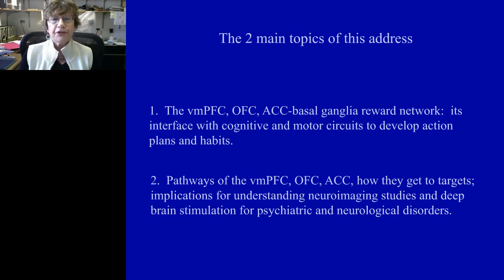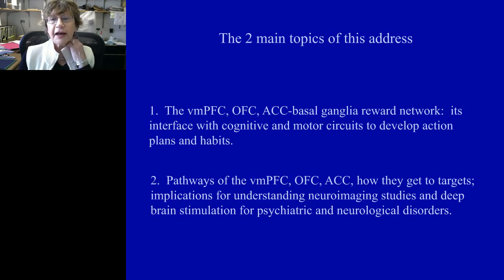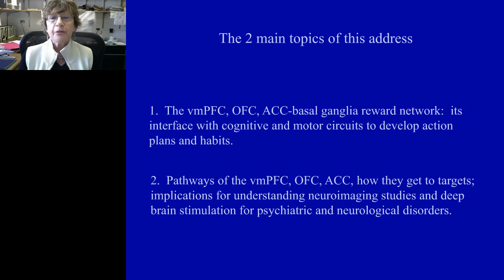The second part of the talk will be somewhat related to the first: how the pathways — the white matter or the connections of these areas — get to their targets. This is very important for understanding neuroimaging studies and abnormalities in diseases. I'm going to use deep brain stimulation, a targeted therapeutic approach for psychiatric and neurological disorders, as an example for how one can think about specific pathways and connections being associated with disabilities.